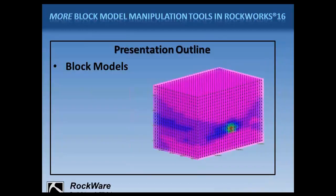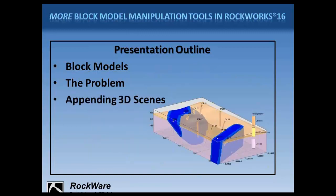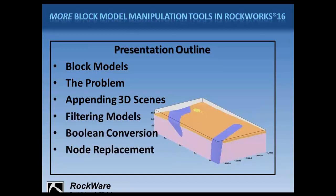In this session, we'll very quickly review the concept of a block model, and then we'll jump directly to the problem. Today's problem addresses how to model intrusive dikes in an otherwise layered stratigraphic environment. We will touch on the comparison of surface-based stratigraphy models versus voxel-based block models, and using oriented fracture data to model the dikes. The block model display of the dikes can very simply be appended to the display of the stratigraphy model, just by appending the Rockplot 3D scenes. Or, we can integrate the dikes into a block stratigraphy model using the solid model grid filters, Boolean filters, and host donor node replacement filters.